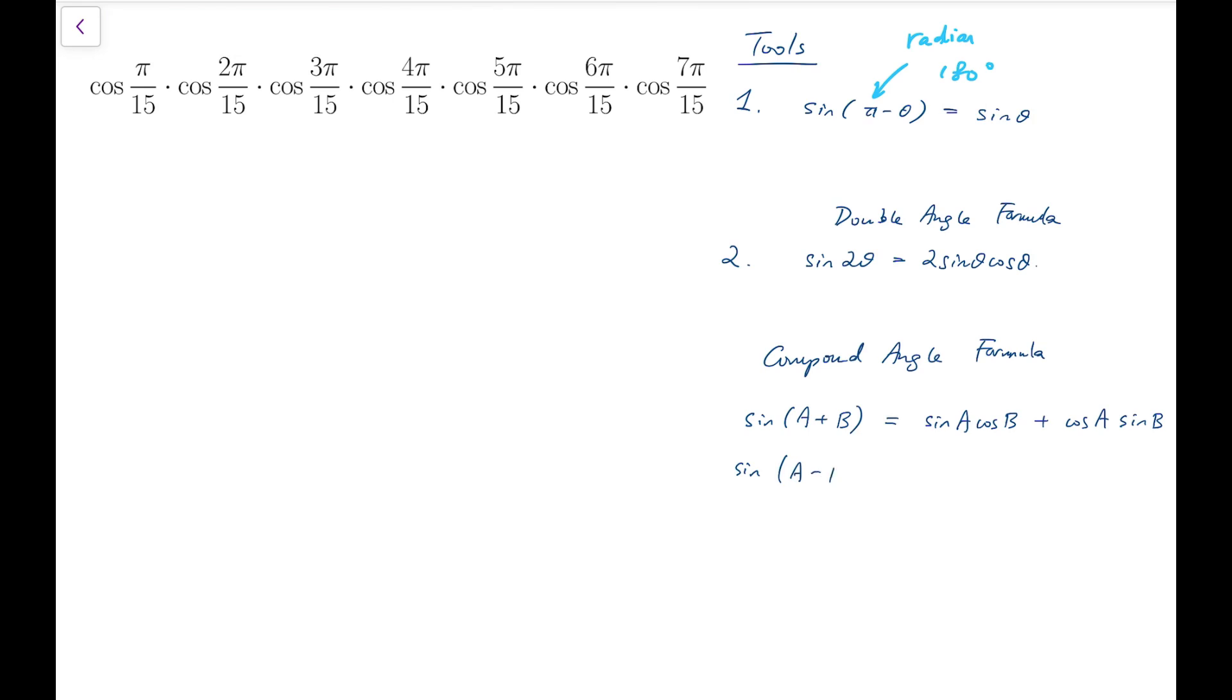If we're doing subtraction instead, then the result is very similar. It's just that the two terms are to be subtracted, not to be added together. So that's the difference between the two compound angle formulas.